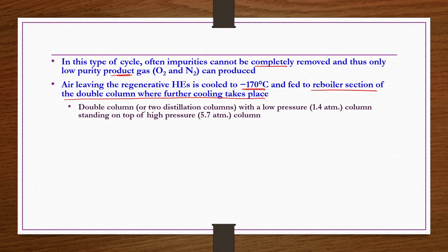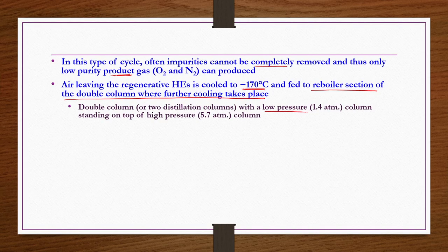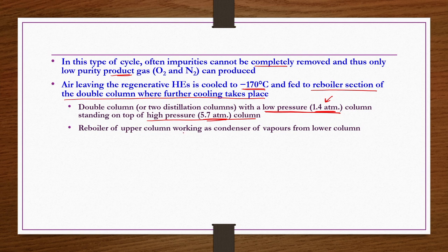The double column consists of two distillation columns, one standing on top of the other. The low pressure column operates at 1.4 atmospheres and stands on top of the high pressure column that operates at 5.7 atmospheres. The reboiler of the upper column works as the condenser of vapors from the lower column.